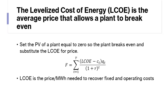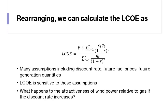This equation leads us back to the levelized cost of energy — the average price that allows a plant to break even. If we set the present value of a plant equal to zero, the plant breaks even, and we can substitute the levelized cost of energy for price. We set the present value equation equal to zero, rearrange, and get F on the left-hand side with price exchanged for levelized cost of energy. The LCOE is the price per megawatt hour needed to recover fixed and operating costs, and it is sensitive to assumptions including the discount rate, future fuel prices, and future generation quantities.